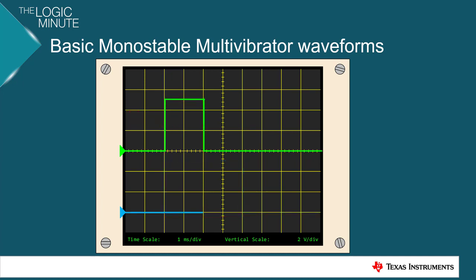Alternatively, you could have the monostable trigger on the falling edge, in which case we would see the pulse width of TW after that initial pulse.